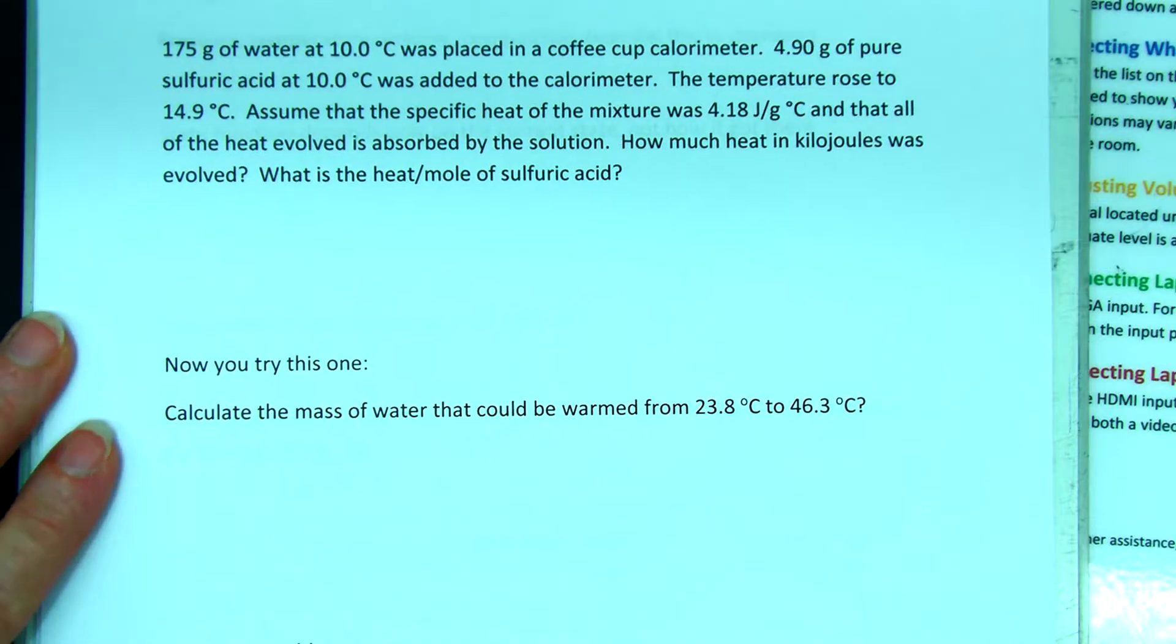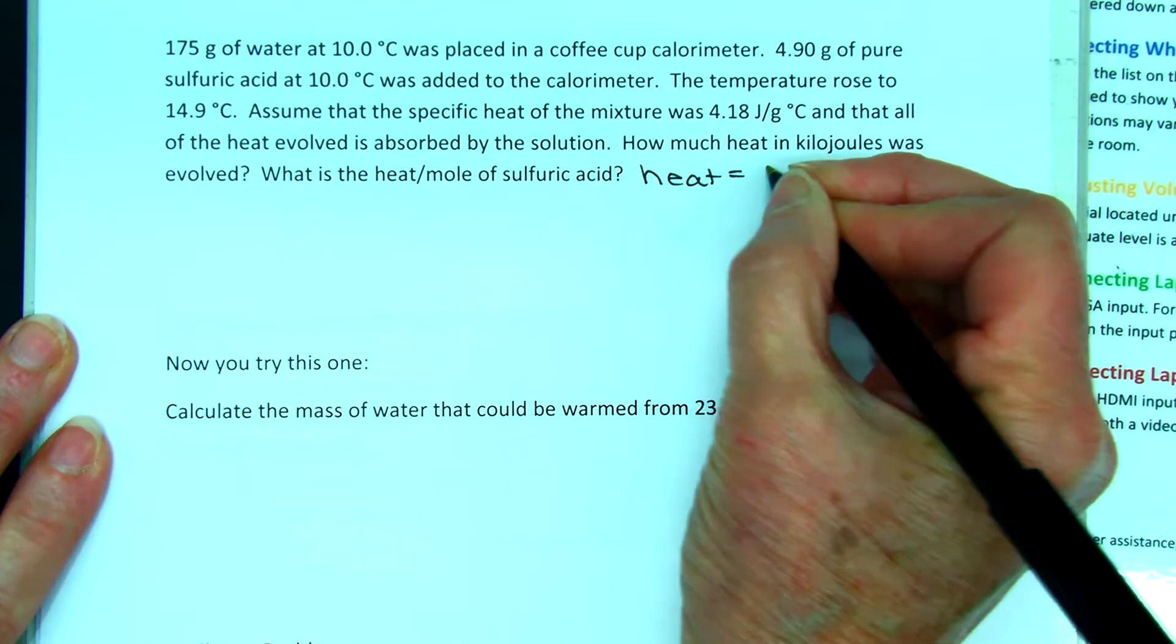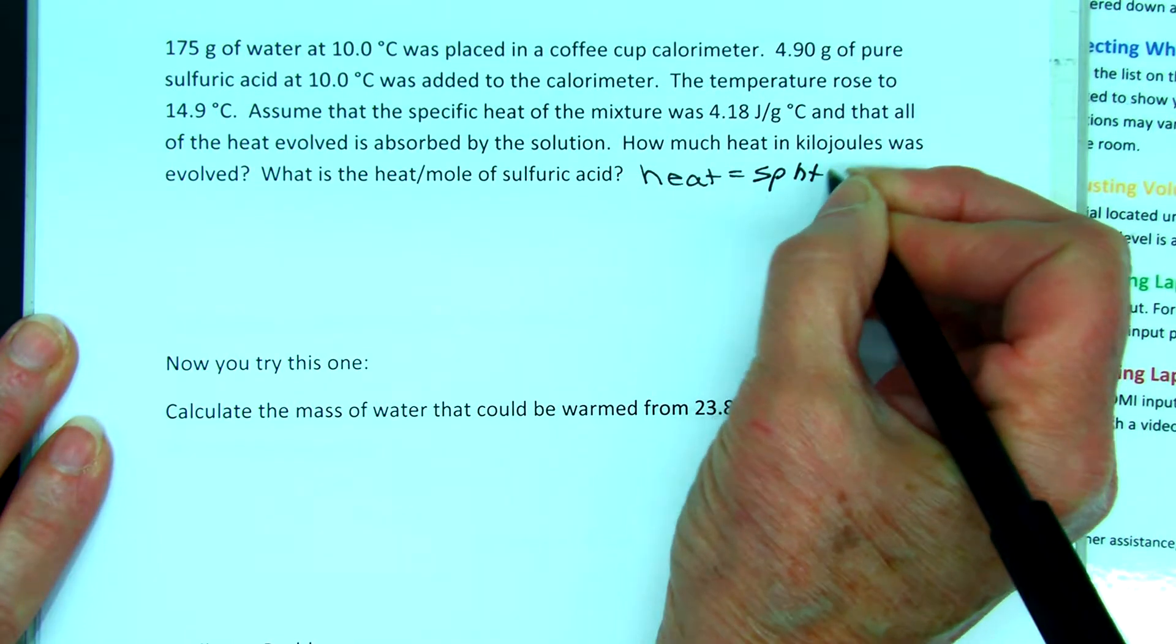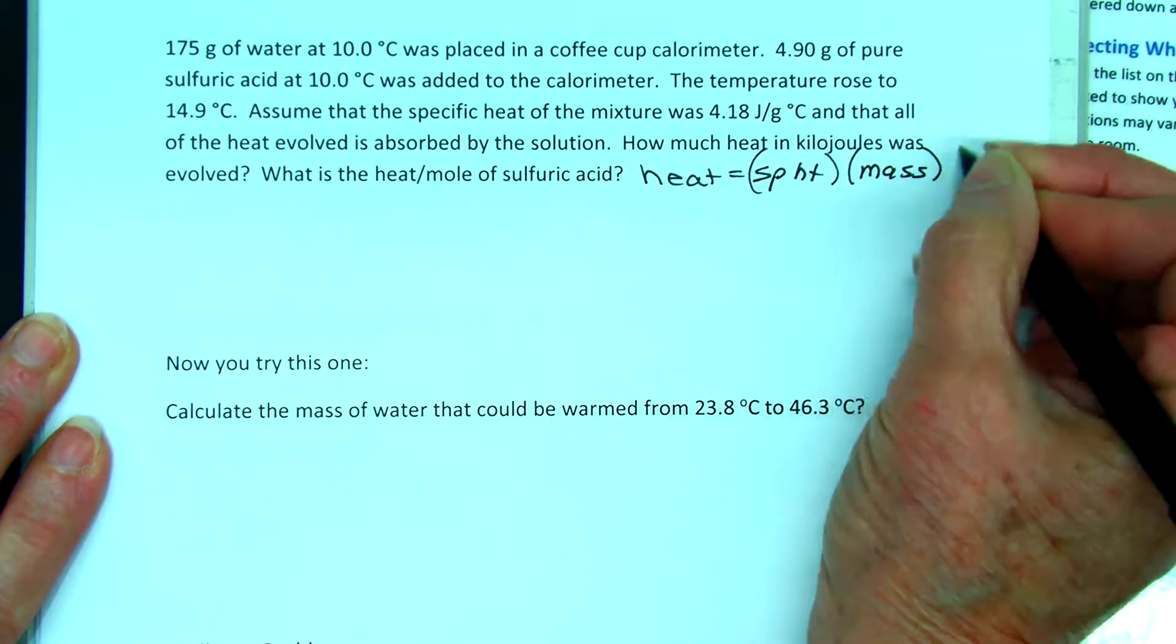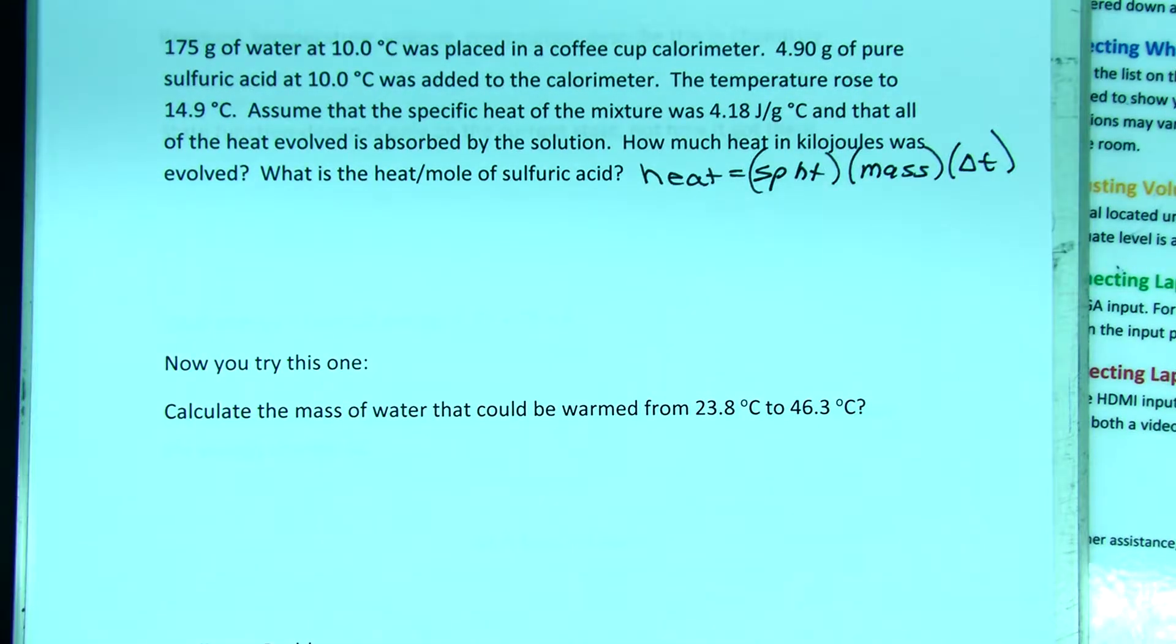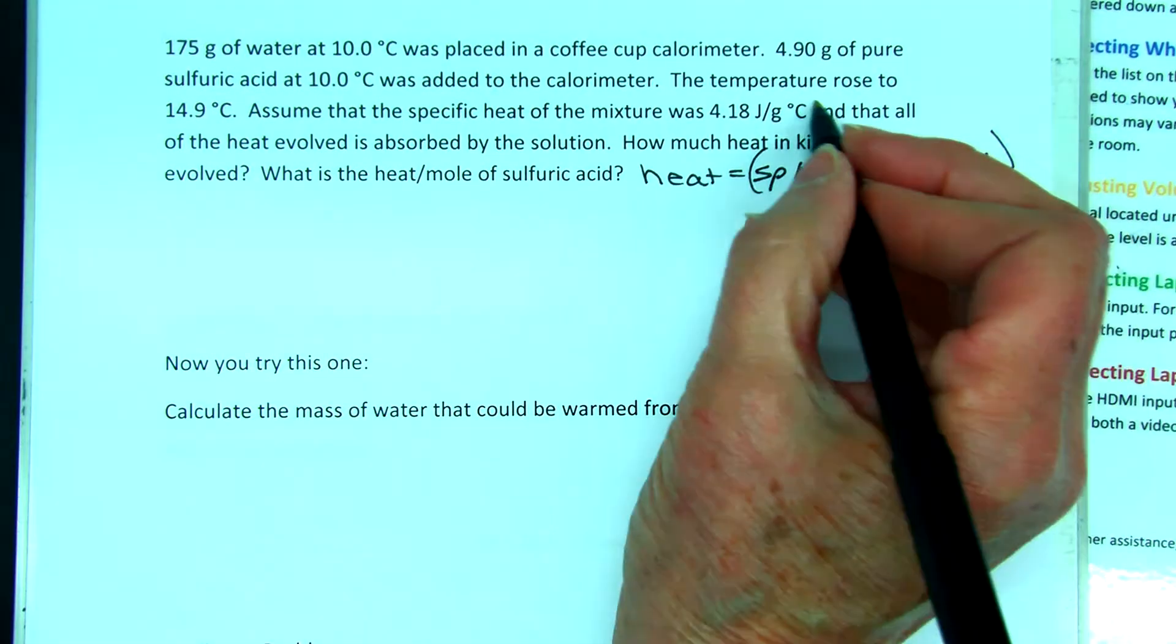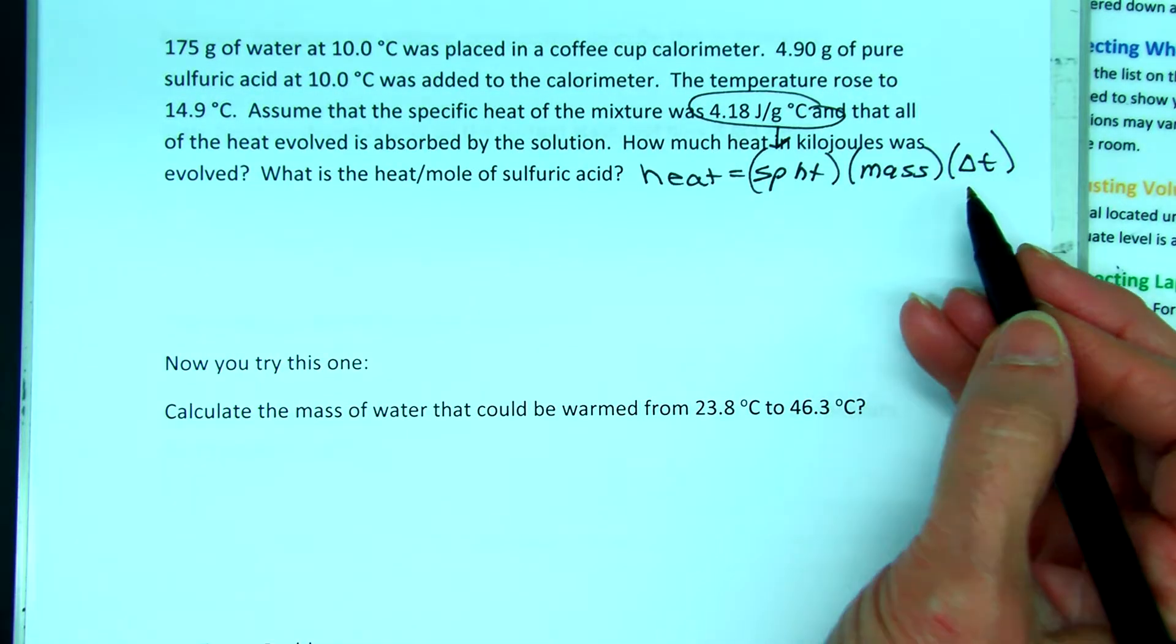This is just like the others. We know that heat is equal to specific heat times mass times delta T. We're given information about the specific heat. That's right here. We know the temperature change,